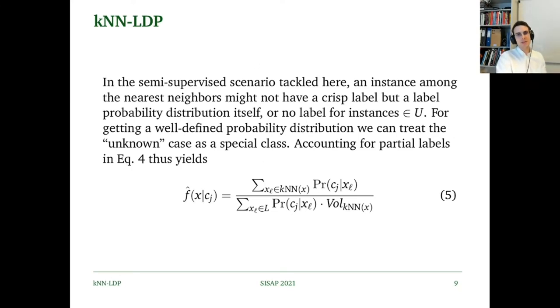In this semi-supervised scenario, the nearest neighbors might not have a crisp label but a label distribution, so we have to account for these partial labels. We then update our equation 4 to sum over the conditional probabilities.